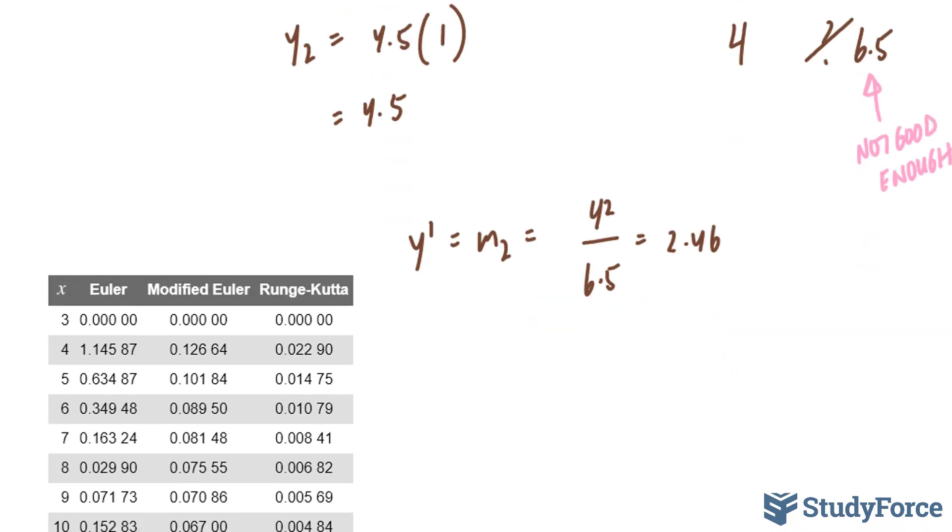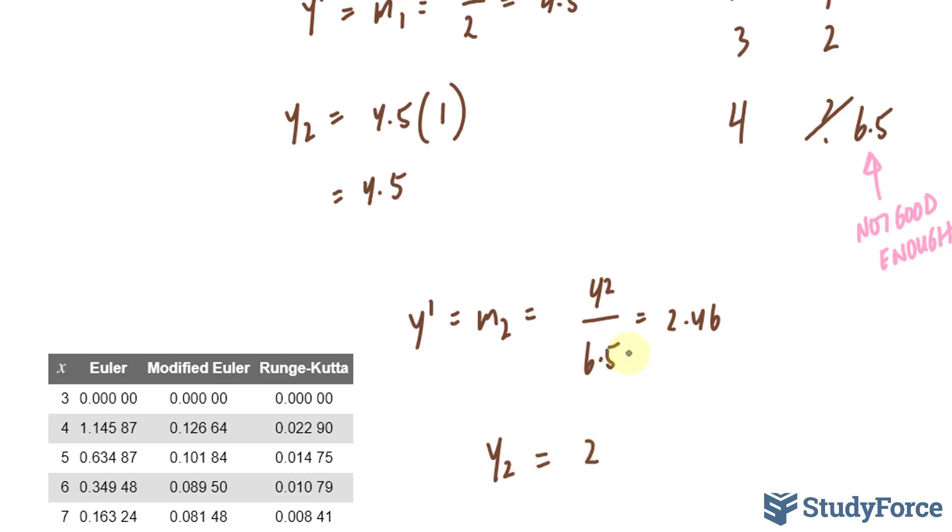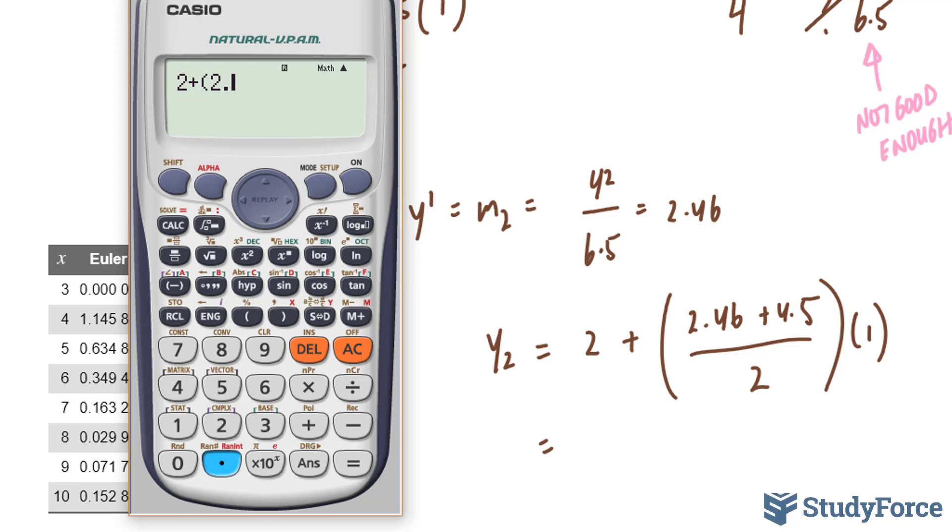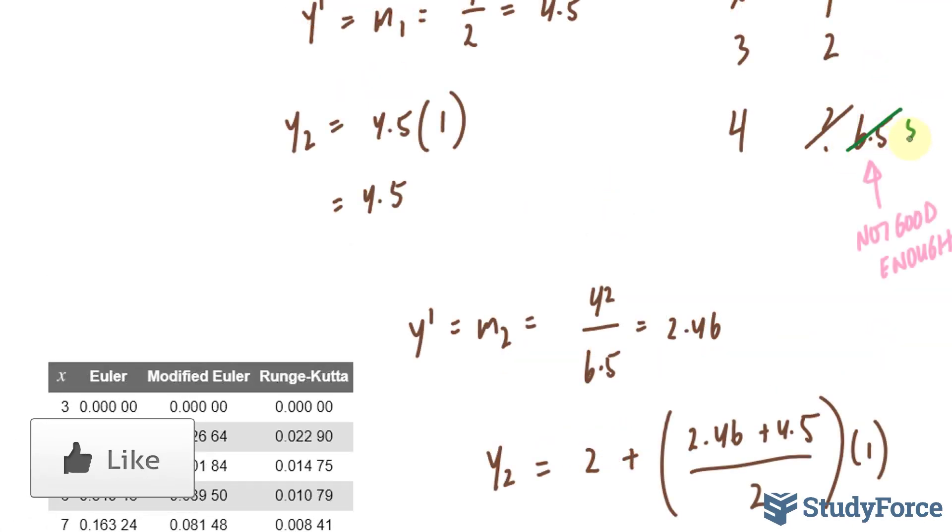So instead of 6.5, what I can do is write down y₂, our second ordinate, equals our previous ordinate which was 2, plus the average of the slopes that we found. So 2.46 + 4.5, and when you take the average you divide by 2, then multiply by Δx which equals 1. So y₂ = 2 + (2.46 + 4.5)/2, which gives us 5.48 instead of 6.5.